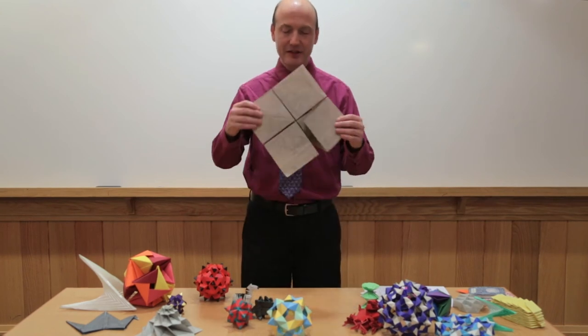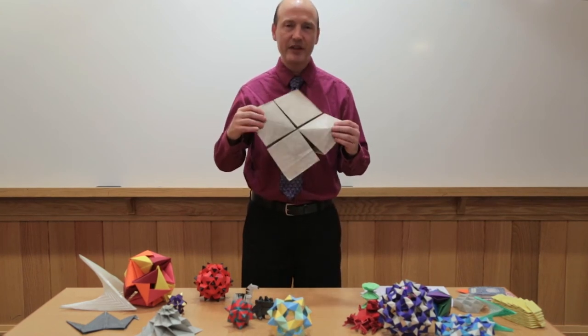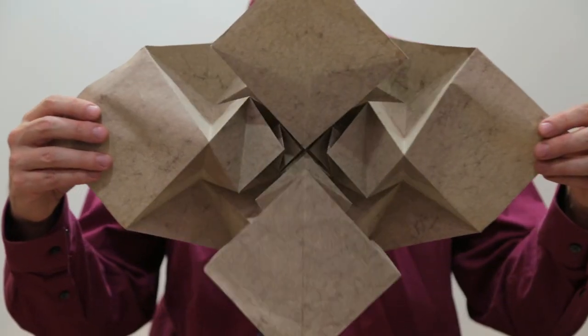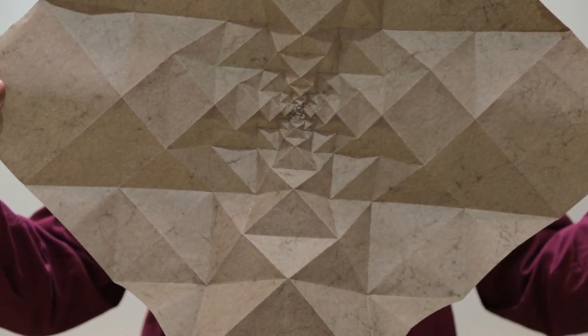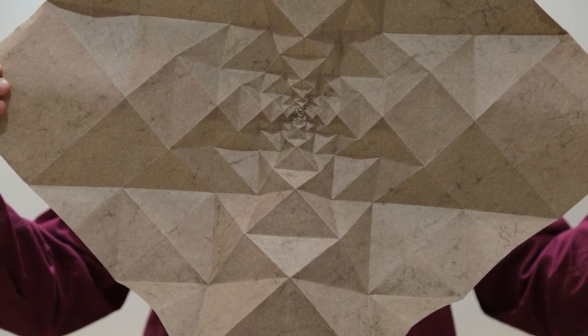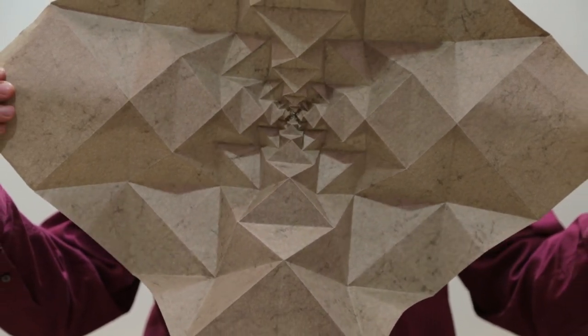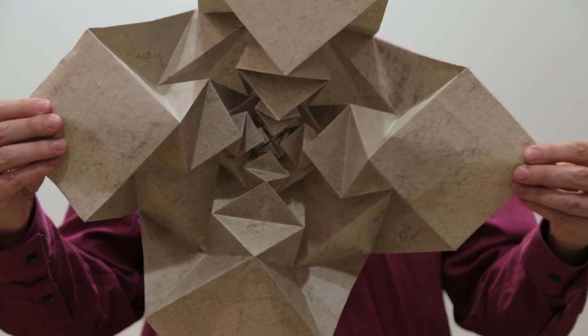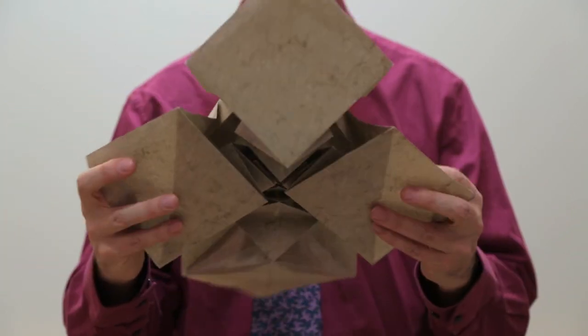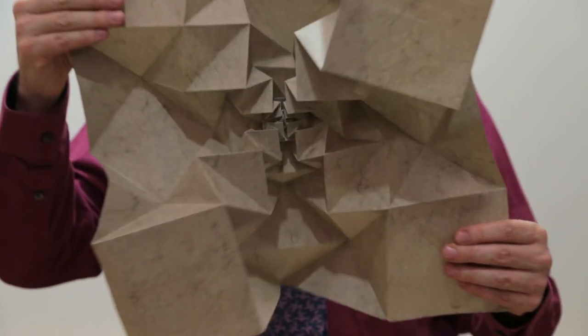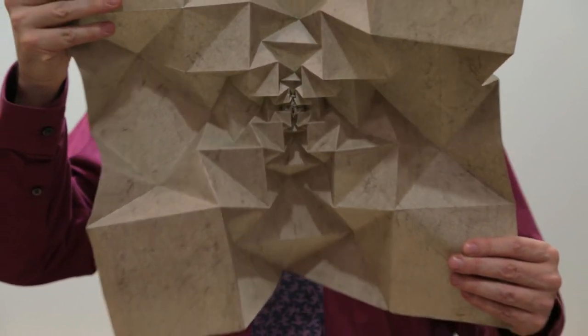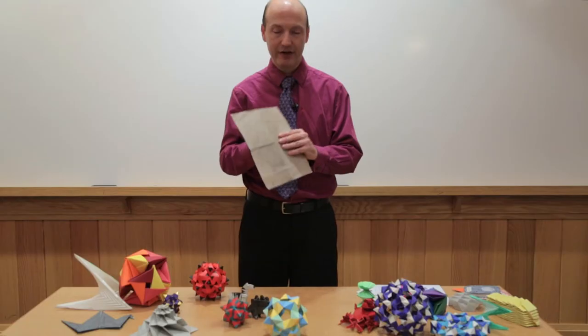Here's another origami tessellation that's a little different. This is one that can repeat infinitely towards the center of the paper if you want. It kind of goes farther and farther in. Although, of course, you can't fold it infinitely to the center unless you're superhuman and have an infinite amount of time. But it's kind of amazing that there are origami models that do have that property of just like kind of tessellating towards the center of the paper as opposed to going on forever in like the x and y directions.